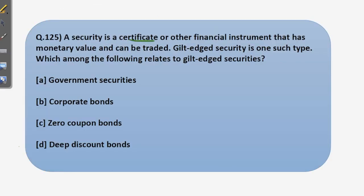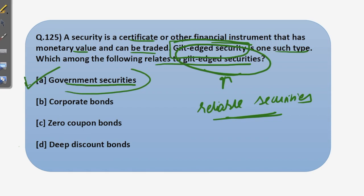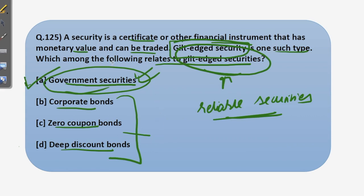The last question: a security is a certificate or financial instrument that has monetary value and can be traded. Gilt-edged securities are reliable securities where there is no risk of default. Government securities are also known as gilt-edged securities because they are the most reliable. Corporate bonds, zero coupon bonds, and deep discount bonds are not as reliable as government securities. So the answer is option A — government securities. With this we have completed our five questions for today. If you have any doubts, ask in the comment section below, and subscribe to our channel for more regular updates.